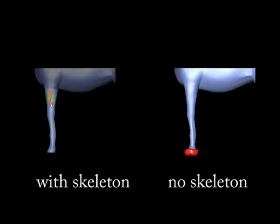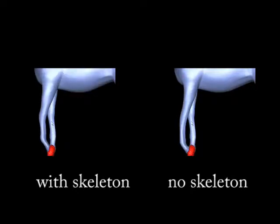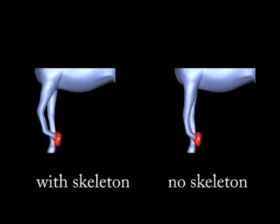Here is a slightly more complex example. A skeleton constraint is applied to the horse's leg. With the skeleton constraint, the deformation result looks much more natural.